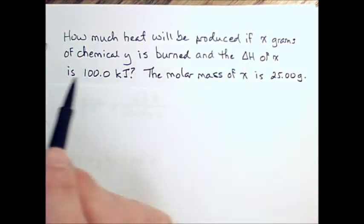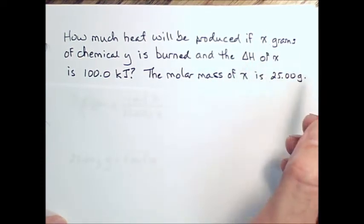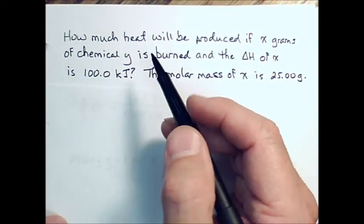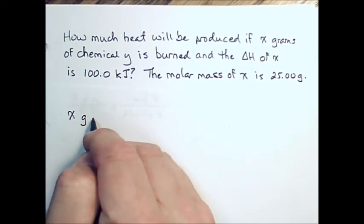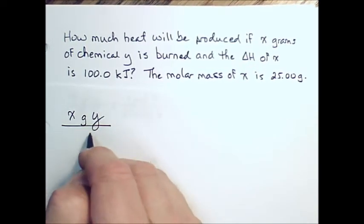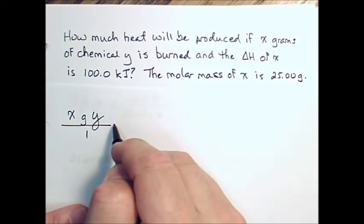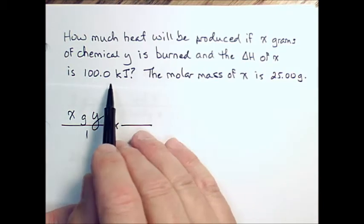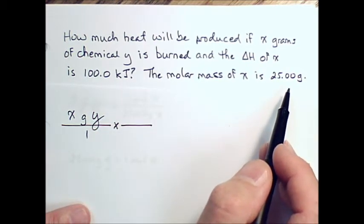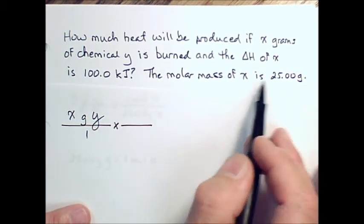Let's see how that lays out here. I've written this general thing: x grams of chemical y. If we have x grams of chemical y, we've got to first convert this into moles. To convert it into moles, we have to have a molar mass. I've given you the molar mass.